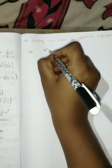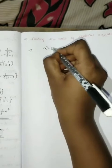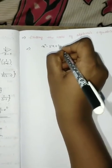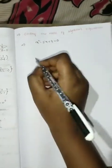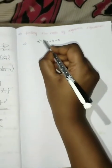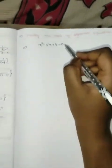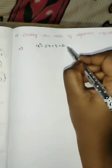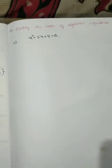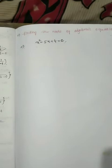Consider the equation x squared minus 5x plus 4 equals 0. Since the power is 2, it is called a quadratic equation. We will use different methods to find the roots of this given equation.